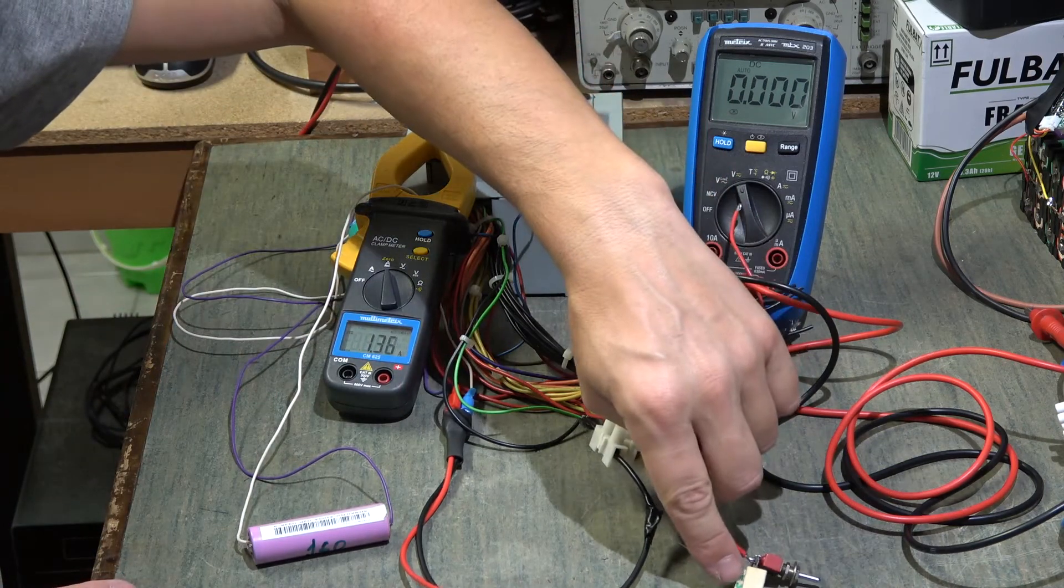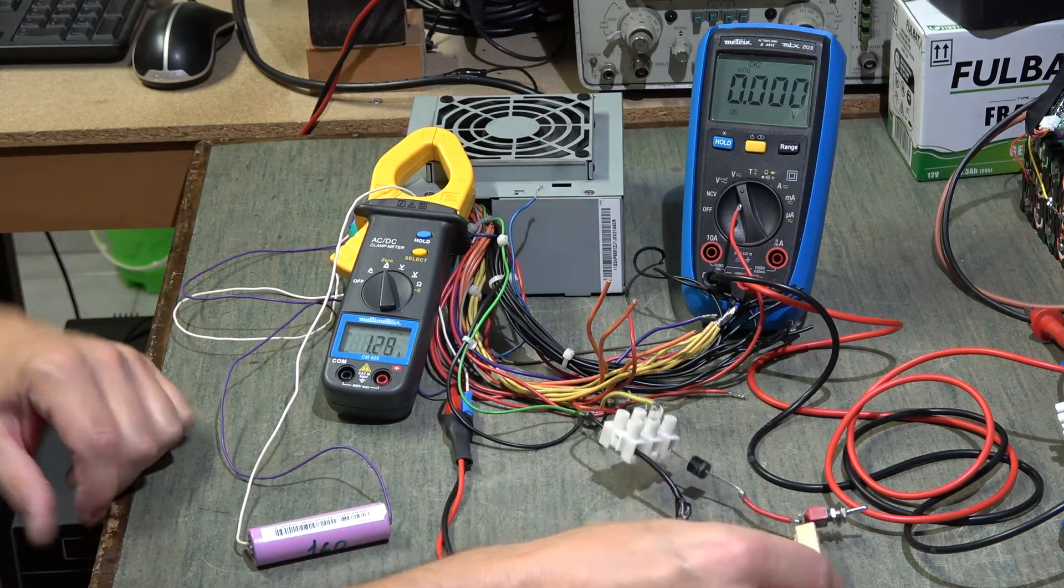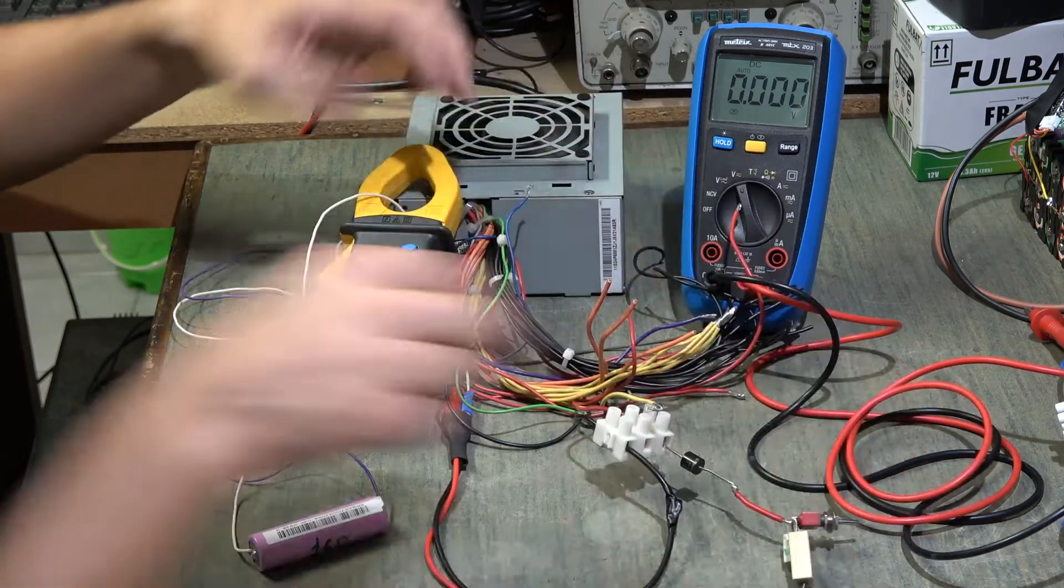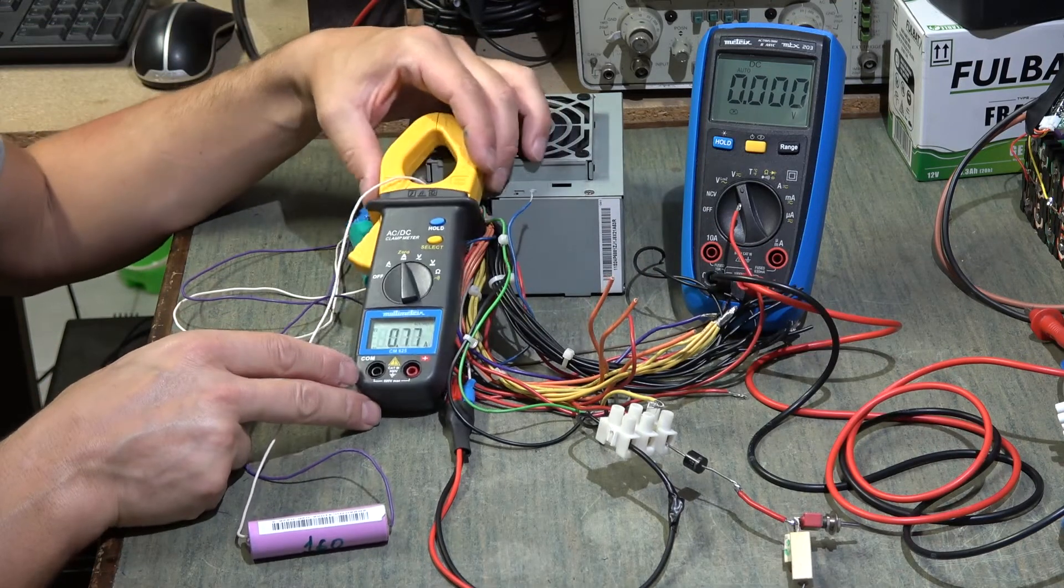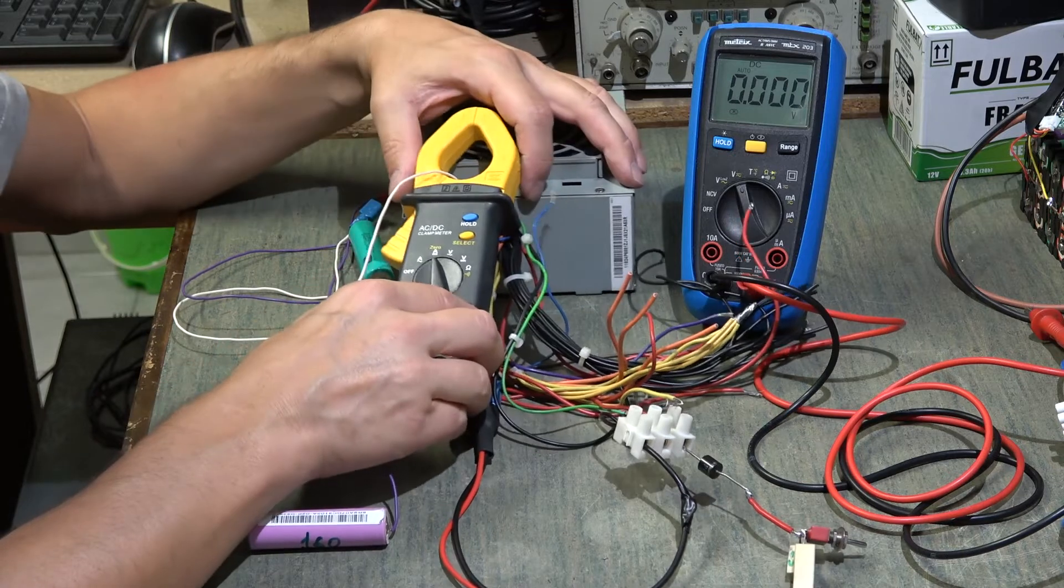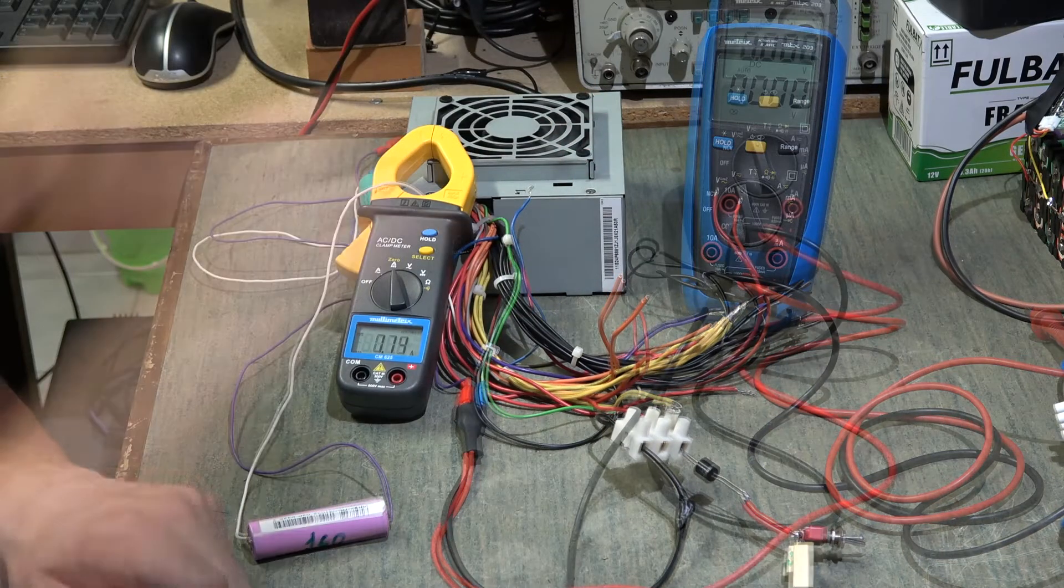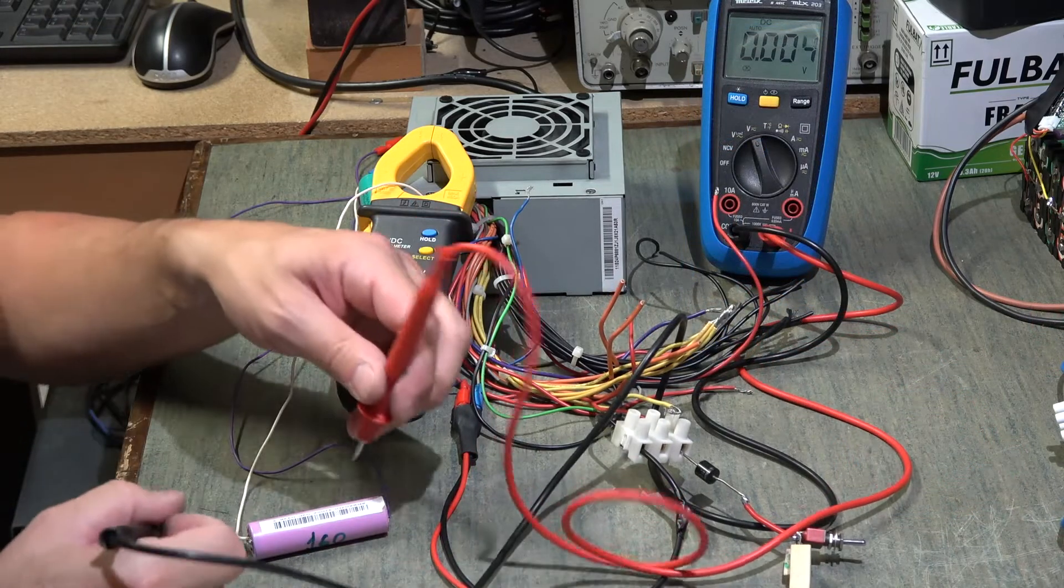If I go to change the resistance, you see the absorption becomes half - that is with the resistance of 1 ohm. Now I will show you another thing.